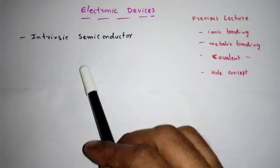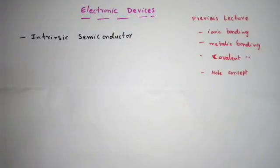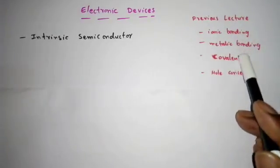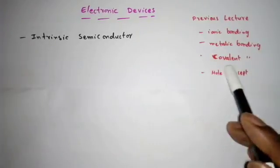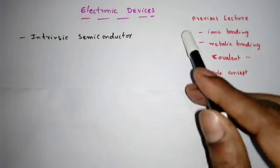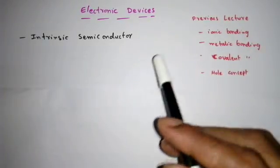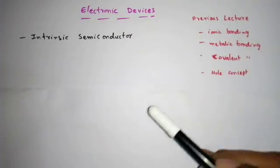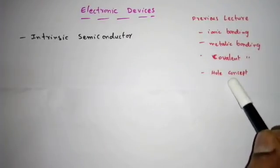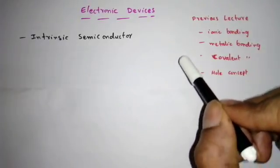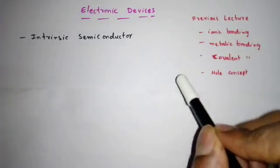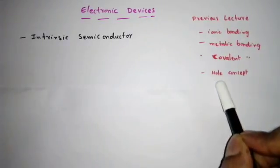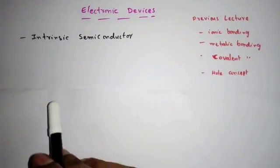In this lecture I'll discuss the intrinsic semiconductor; in the next lecture we'll discuss the extrinsic semiconductor. In the previous lecture we discussed bonding forces in solids — ionic bonding, metallic bonding, and covalent bonding. Covalent bonding is important for us, present in fourth group elements, where two electrons are shared in a bond. We also saw the hole concept: whenever an electron moves from valence band to conduction band, it leaves an empty state called a hole, and we saw how this hole moves opposite to the electron.